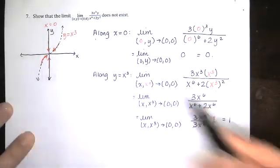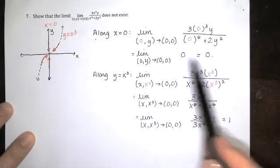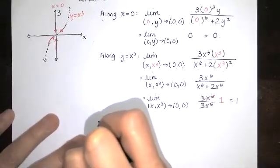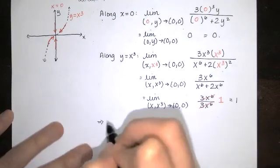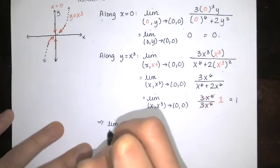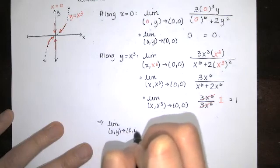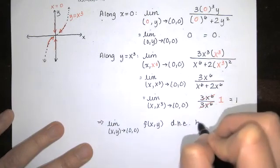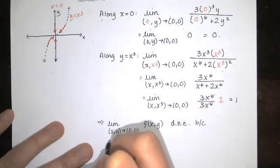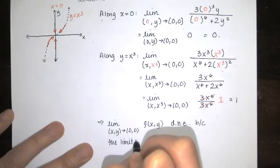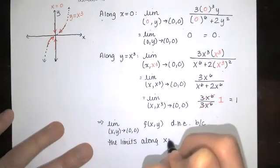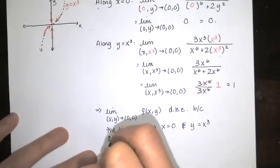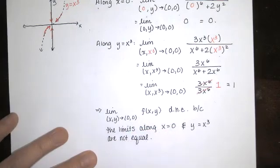So along this path, the z values are approaching 1. And along this path, the z values are approaching 0. Since we get two different limits, that limit does not exist. So we'll say this implies that the limit as x, y approaches 0, 0 in general of the function does not exist. And let's explain our answer because the limits along x equals 0 and y equals x cubed are not equal. And that's it.